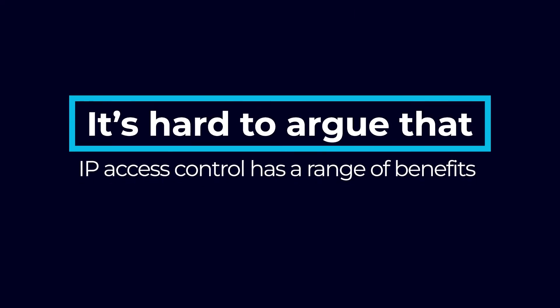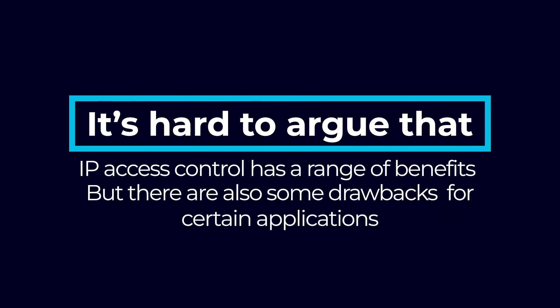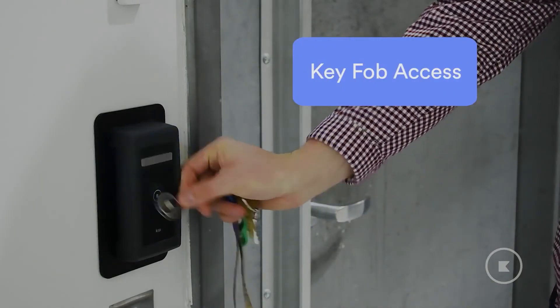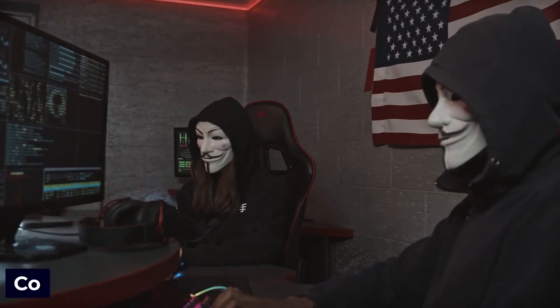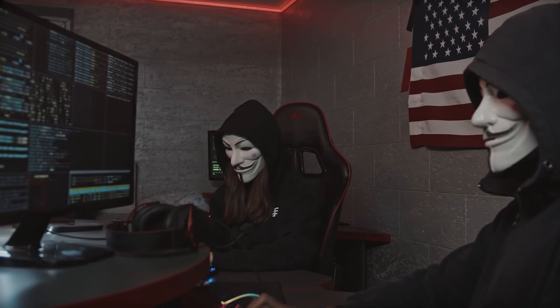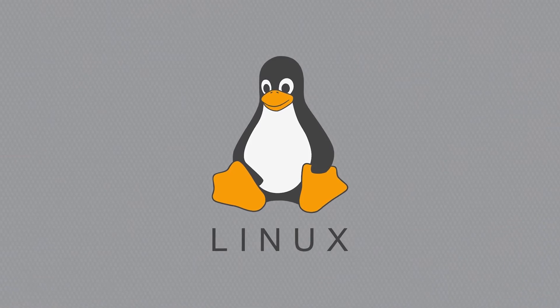It's hard to argue that IP access control has a range of benefits, but there are also some drawbacks for certain applications. If your area doesn't have an internet network, it will be difficult or impossible to install an IP system there. The reliability of your IP system depends on your network — if the network experiences heavy traffic or equipment failures, it could affect the functioning of your access control system. Some people express concerns about hackers gaining access to their IP security systems, though most modern IP access control systems are equipped with operating systems or platforms such as Linux, which secure them against hackers.